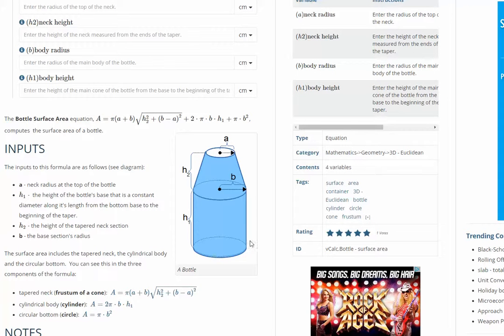It is a cylinder, including the base, the circular base, and then it is the tapered neck, which is technically the frustum of a cone.